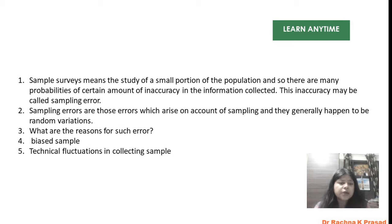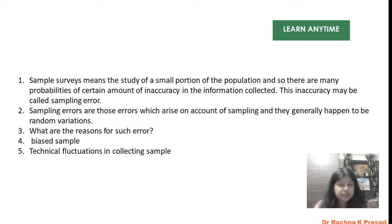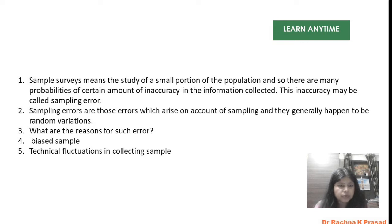Sampling errors are those errors which arise on account of sampling. They generally happen to be random variations — there are some variations, some deviations that we see. It seems like this error appears in the population, and as a result, the outcomes of our study can be different from what was expected. This difference can also be seen as a sampling error.